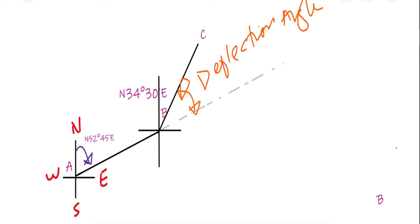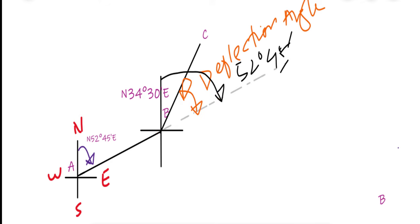The bearing of line AB is north 52 degree 45 minutes east. Extend the line AB as shown in red dotted lines. The bearing of line BC is north 34 degree 30 minutes east.